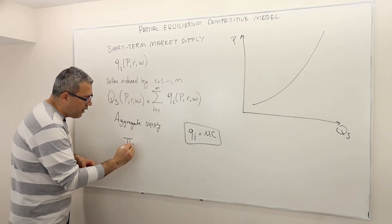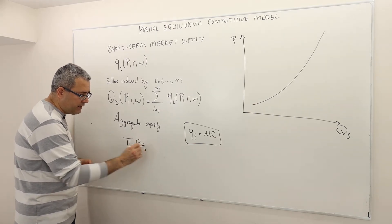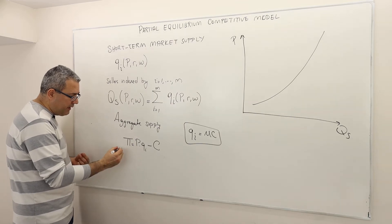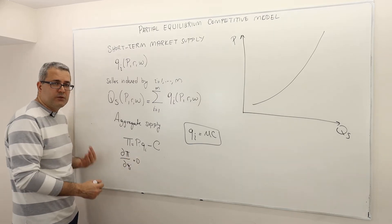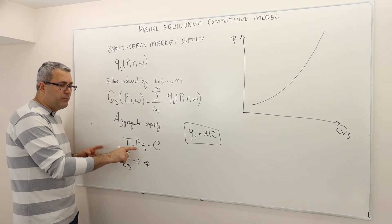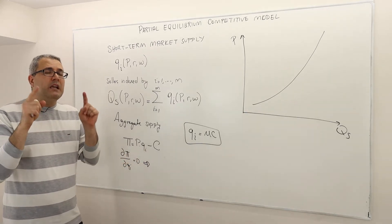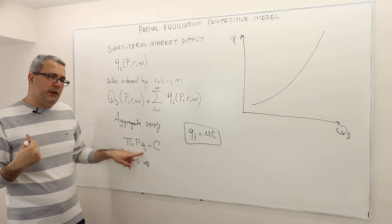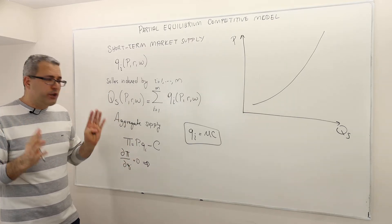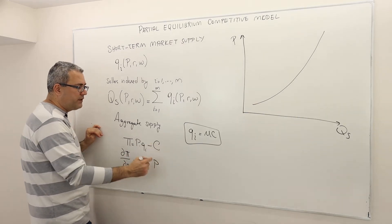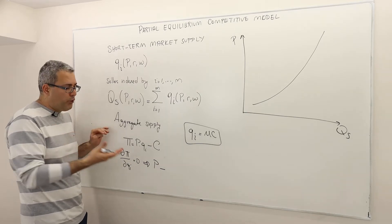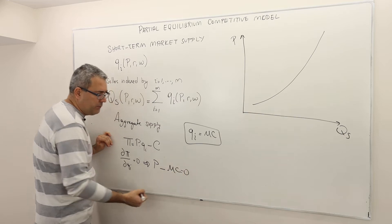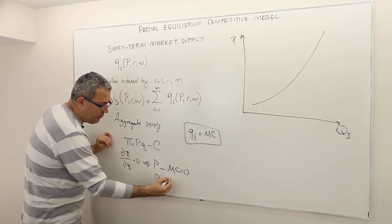The profit of an individual firm is going to be market price times the quantity this firm is producing, minus the cost of this firm. The profit-maximizing quantity: you take the partial derivative with respect to quantity and set it equal to zero. The first-order condition means when you take the partial derivative of revenue P times QI — remember, P is a fixed number in a perfectly competitive market because everybody takes price as given, meaning P does not change as you change your quantity. So its derivative is simply P. The derivative of the cost function is what we call marginal cost. Therefore, the first-order condition gives us: price must equal marginal cost.